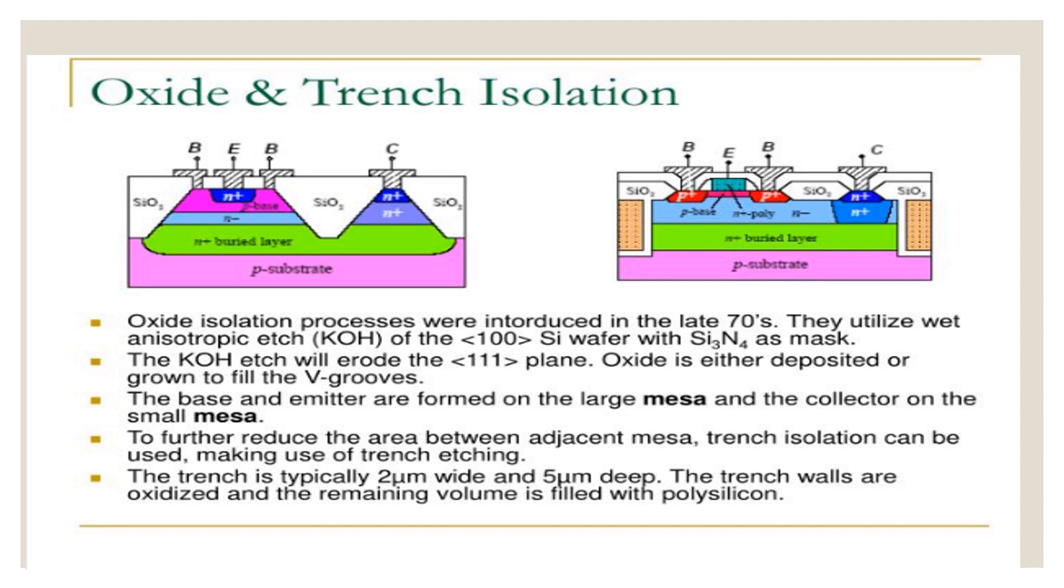As we have discussed earlier, that is when a device is ready, then isolation is required between one device to the other and such isolation is achieved by oxide and trench isolation. Oxide isolation processes were introduced in the late 70s. They utilize wet anisotropic KOH etch of the 100 silicon wafer with silicon nitride as mask. The KOH will erode the 111 plane and oxide is either deposited or grown to fill the V grooves.